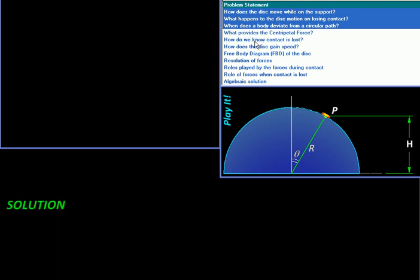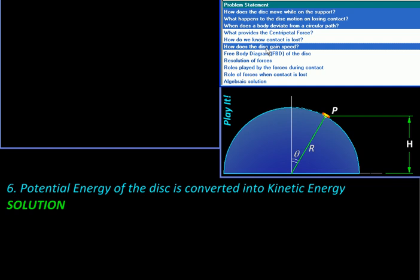And finally, what makes the disc gain speed? Well, it is losing height as it slides, so its potential energy is reducing. That must be getting converted into kinetic energy.